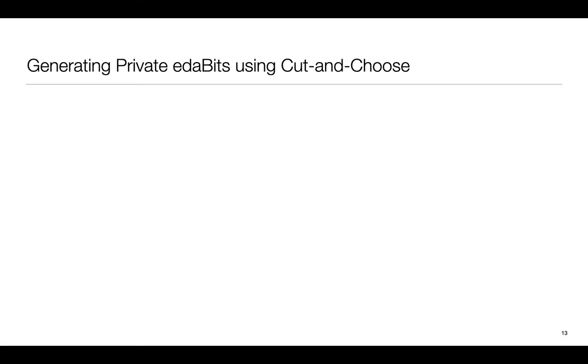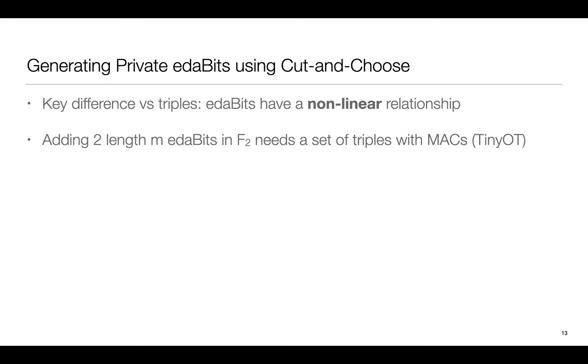We want to do a similar thing for EDABITS but there is an important difference to take care of. Checking two multiplication triples requires no additional information. In other words it's a self-contained check whereas with EDABITS the relationship is nonlinear so we need authenticated triples. In this case we use TinyOT to generate them. The naive approach would be to let the parties generate random secret shared TinyOT triples, run a Cut-and-Choose protocol to verify them and once we have secured TinyOT triples we can use them for Cut-and-Choose with EDABITS.